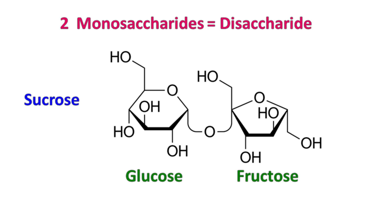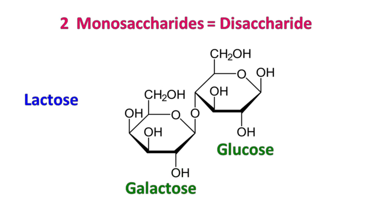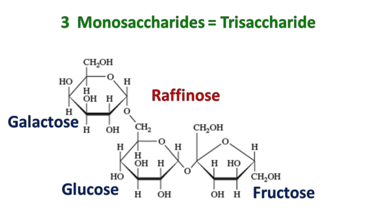Sucrose is made up of glucose and fructose. Lactose is made up of galactose and glucose. An example of a trisaccharide is raffinose. Raffinose is made up of galactose, glucose, and fructose.